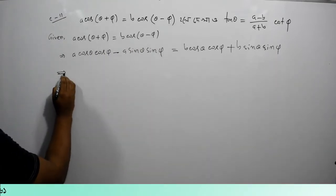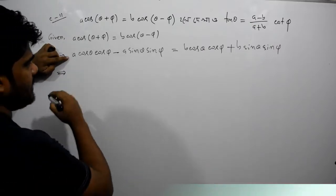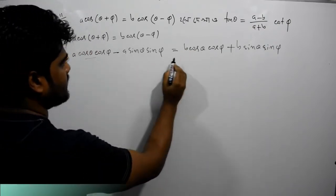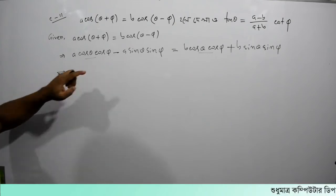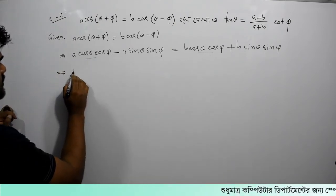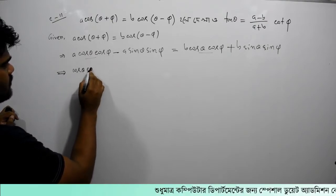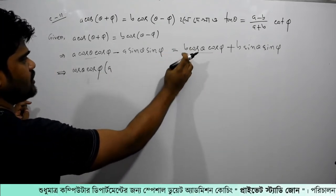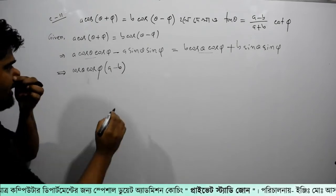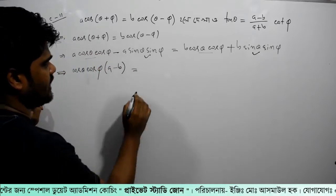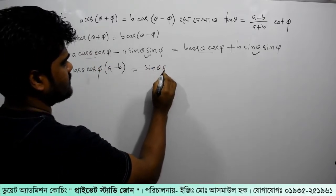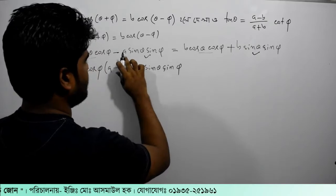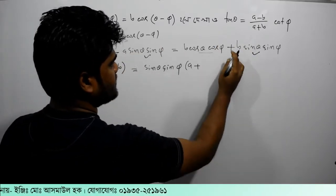So let's see if we see a minus b, then we see a cos theta cos phi. We see a cos theta cos phi common. So if we see a cos theta cos phi common, then we see a cos phi. If we see a minus cos phi, then we see a cos theta cos phi cos phi.